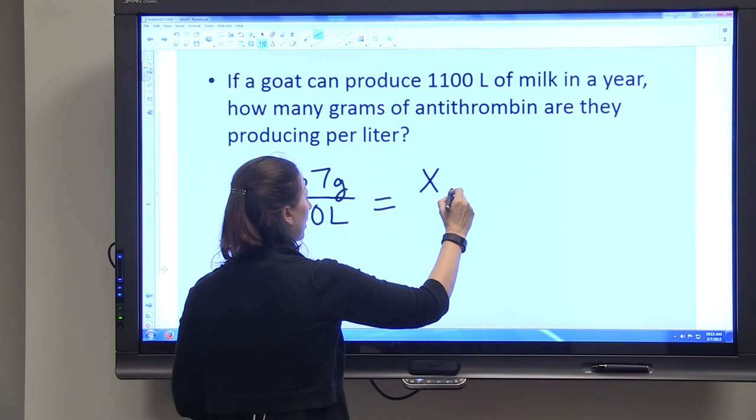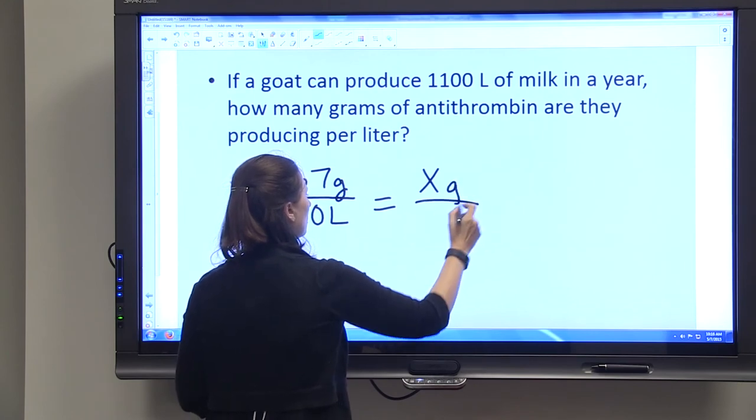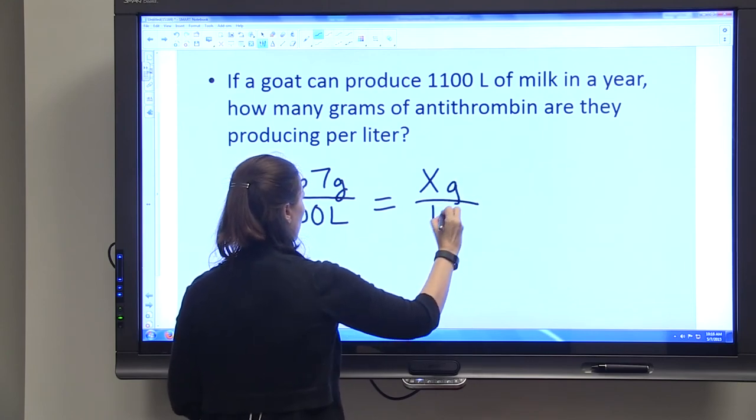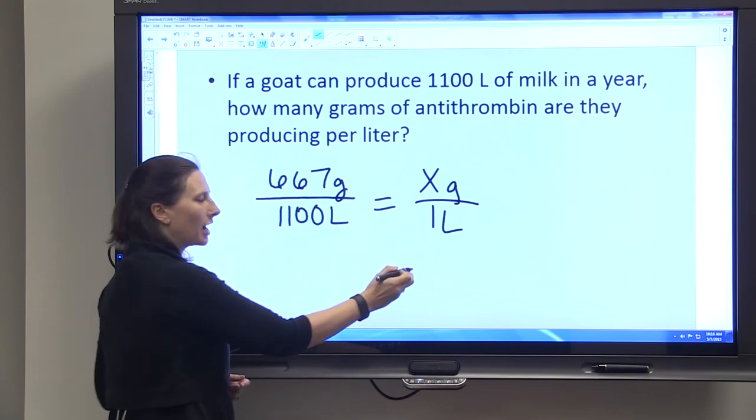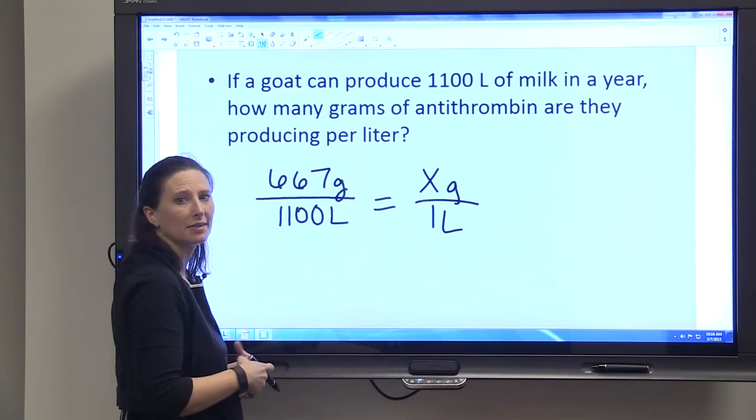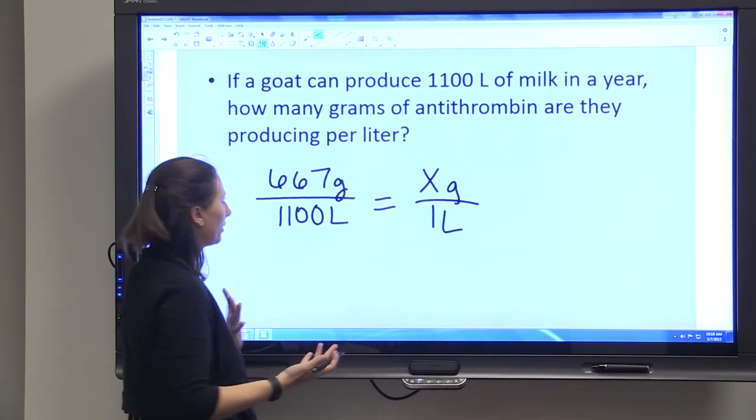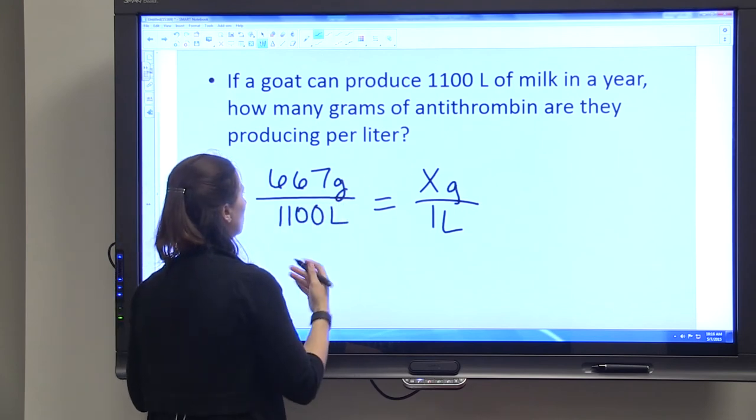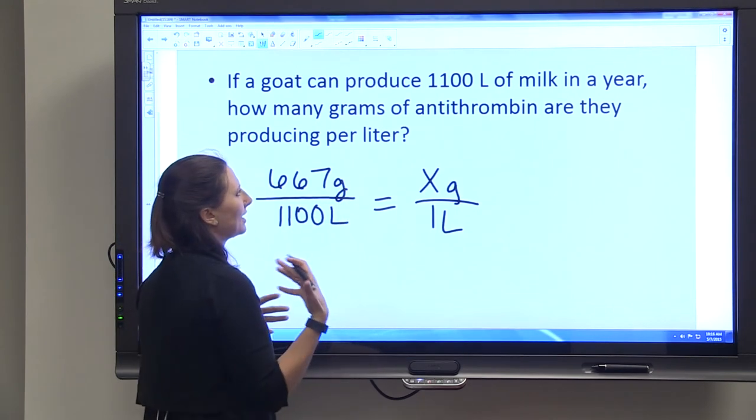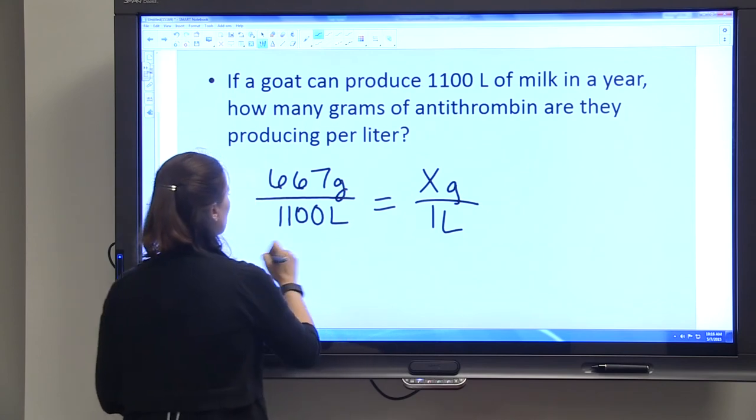Again, we're just cross multiplying the same as with the apples and the calories. It's just that we're using grams and liters and goats and transgenic animals to determine what proportions to set up.